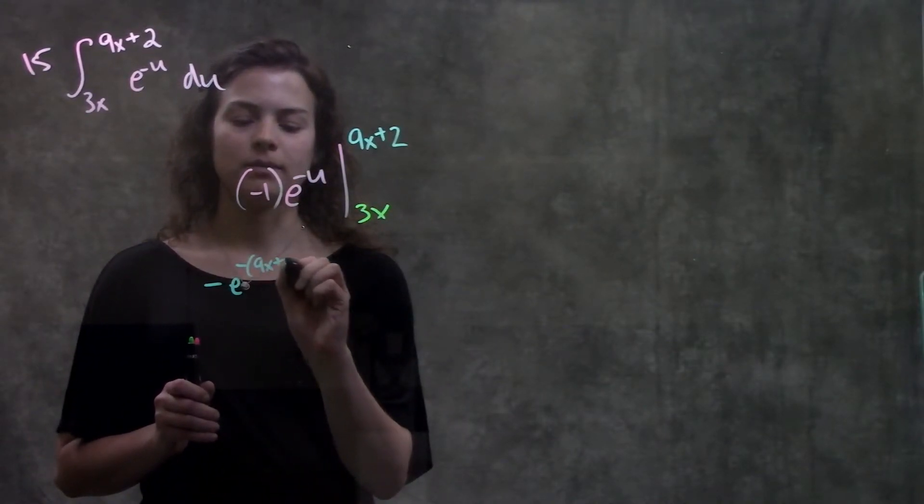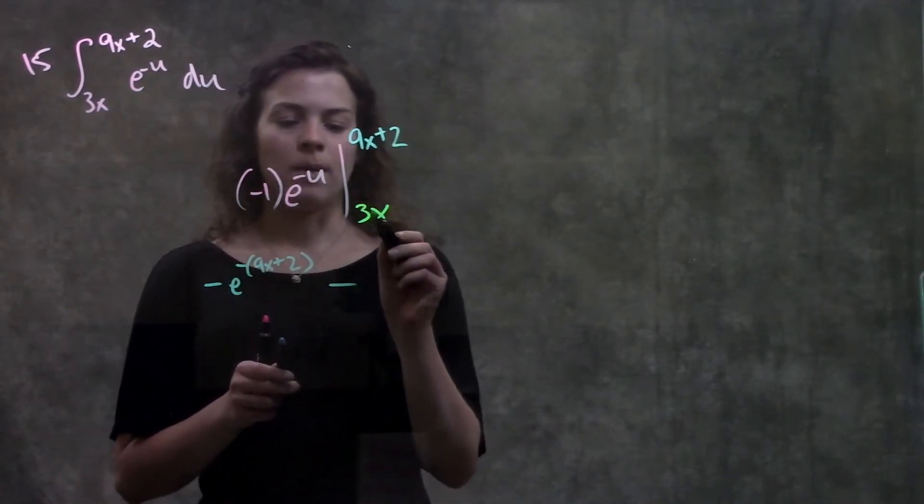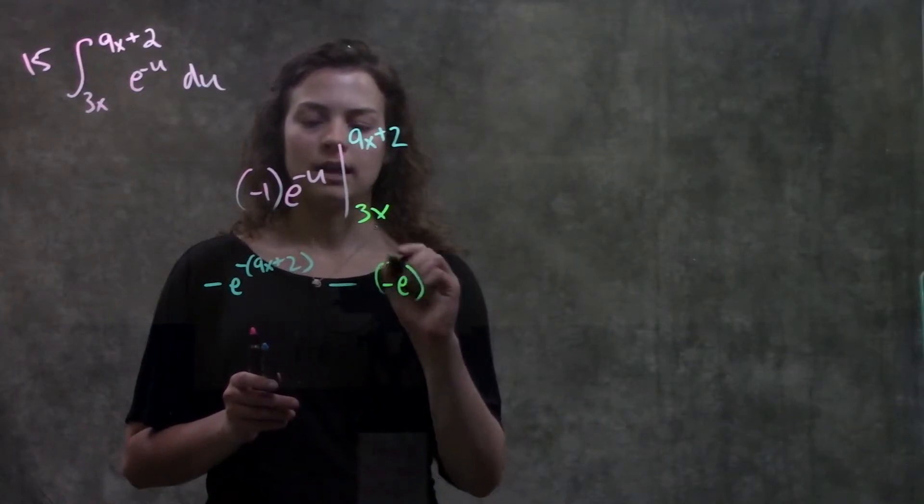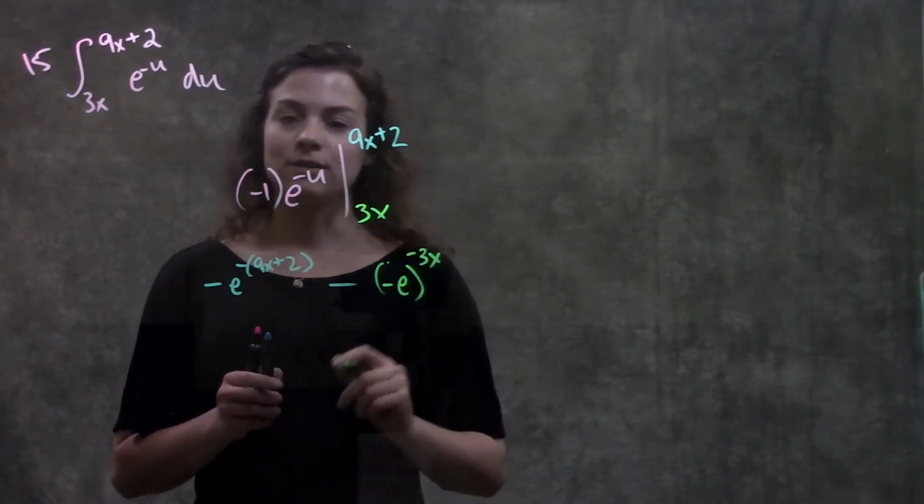When we plug in 3x, this becomes negative e to the... Remember, this negative sign distributes again. Minus 3x.